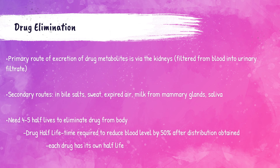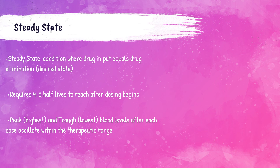The primary route of excretion of drugs is through the kidney. Secondary routes of drug excretion include sweat, expired air, saliva, bile salts, and mammary glands. A drug half-life is the time it takes the drug concentration in the blood to be reduced by half. Each medication has its own specific half-life, however in general it takes about four to five half-lives in order to be completely eliminated from the body.